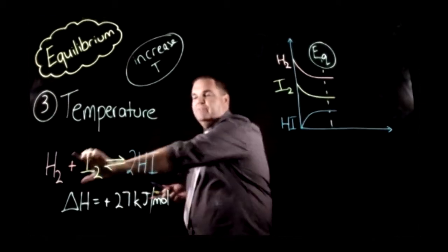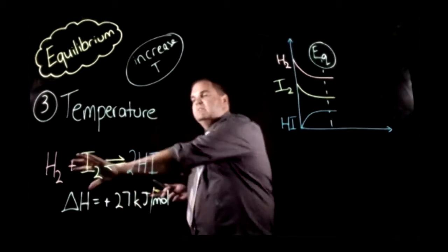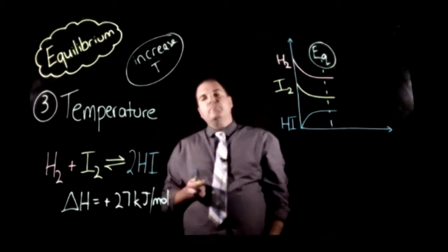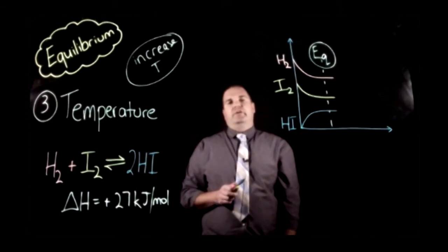Increasing that temperature is going to favour the forward reaction because that's endothermic. So we're putting energy in, means that this reaction is much more favoured. So our hydrogen and iodine are going to be used up and we're going to produce more hydrogen iodide.